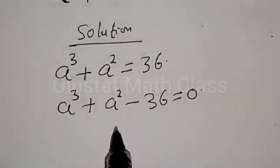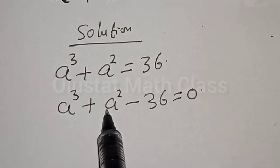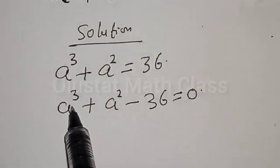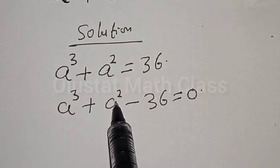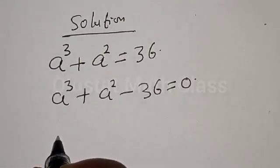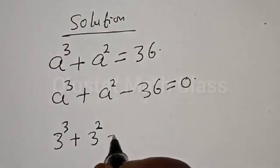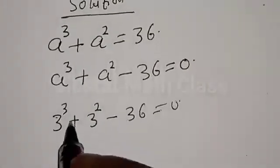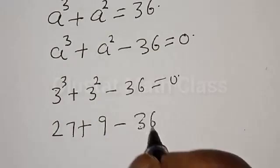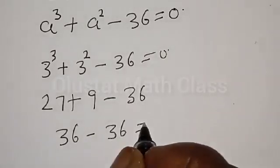Now we want to find one of the roots. Let's try at a equal to 1. If a is equal to 1, we have 1 raised to power 3 plus 1 squared minus 36, which is not equal to 0. Let's test at a equal to 2. Then this will be 2 raised to power 3, that is 8, plus 2 squared, 4, minus 36, which is not equal to 0. But at a equal to 3, we have 3 raised to power 3 plus 3 squared minus 36. That is 27 plus 9 equals 36 minus 36.